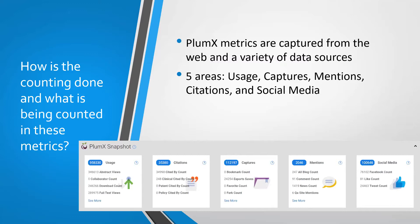So how is this counting done and what is being counted in these metrics? Plumex metrics are captured from the web and a variety of data sources that are either subscription or free access. It pulls together this data and produces five categories of metrics, which are usage, captures, mentions, citations, and social media. What you can see at the bottom of this slide is a snapshot from our institutional repository, Toro Scholar, and you'll see that usage has the highest number at nearly 1 million in total.